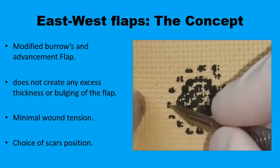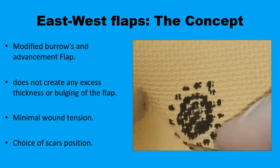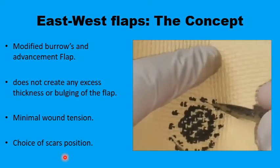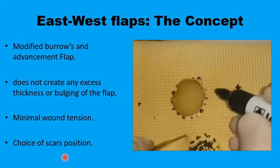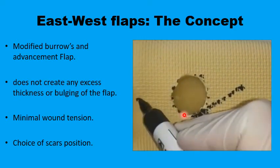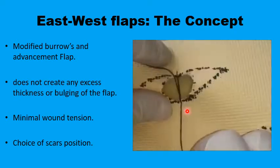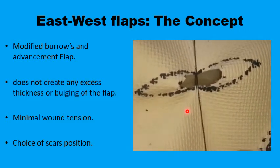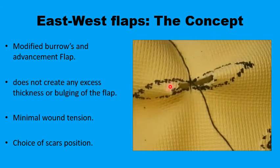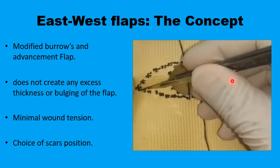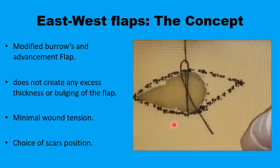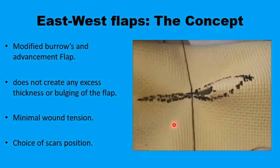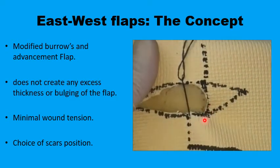To demonstrate how the east-west flaps developed: starting with a circular defect, you would consider transforming it into an elliptical or fusiform defect by removing extra tissue on both sides of the circular hole. If you don't do this, there will be too much tension in the middle and two dog ear deformities at the periphery. If you excise only one of the triangular pieces on one side, you minimize tension a little but still have a dog ear deformity on the other side.